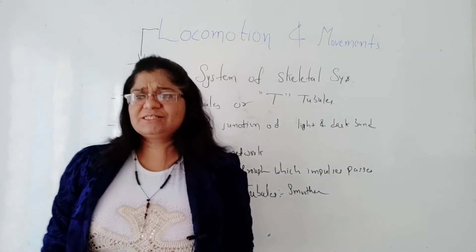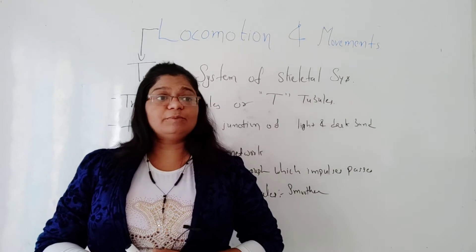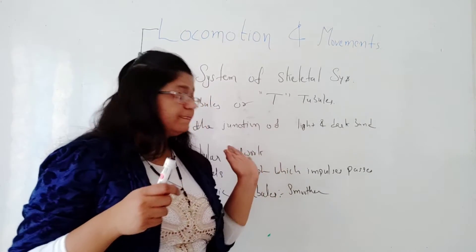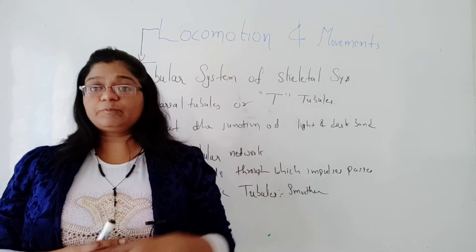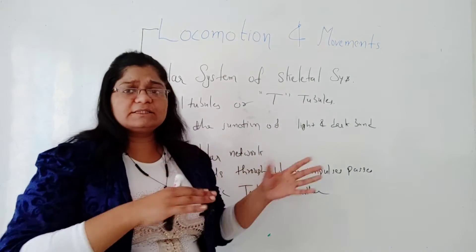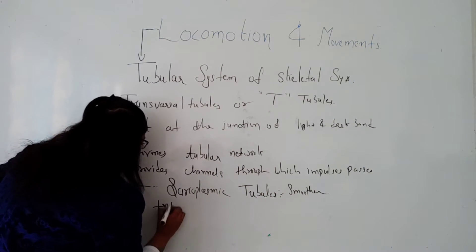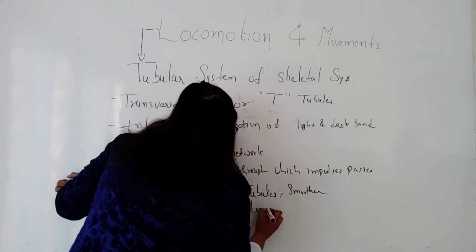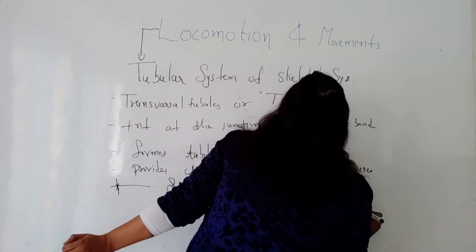The sarcoplasmic reticulum tubules are smooth tubules and they form a cisternae-like structure — similar to the endoplasmic reticulum and Golgi bodies you learned about in Class 11, which are also sac-like cisternae structures. The sarcoplasmic tubules are present as cisternae on either side of the T-tubule network.